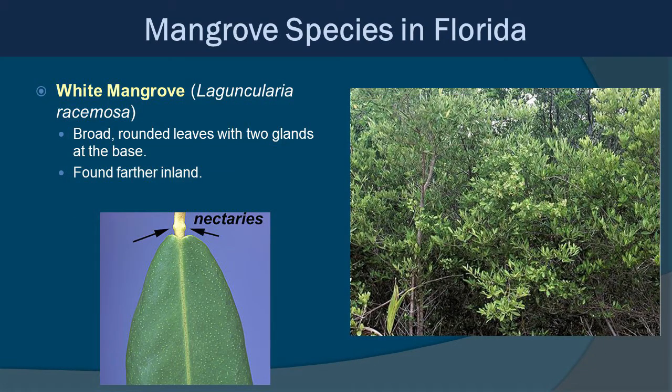Farthest back from the water, we generally have the white mangroves. These have broad, rounded leaves with two glands at the base that are somewhat nectar-like. They're found a little farther back and don't have those broad prop and drop roots, and they don't have pneumatophores. They kind of look a little more like typical trees, but they are part of the mangrove landscape.